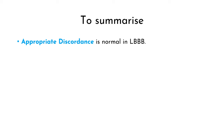When Sgarbossa Criteria is used for RV paced rhythms, concordant ST depression is looked for in leads V1 to V6 and not just V1 to V3. This is because RV paced rhythms tend to have predominantly negative QRSs in V1 to V6. In addition, using V1 to V6 increases the sensitivity of the modified Sgarbossa Criteria for paced rhythms. As per 2013 AHA guidelines, new onset LBBB is no longer considered a STEMI equivalent and therefore is not an indication for immediate cath lab activation, because studies have shown that only 2 to 4% of patients with chest pain and new onset LBBB actually have acute coronary occlusion.